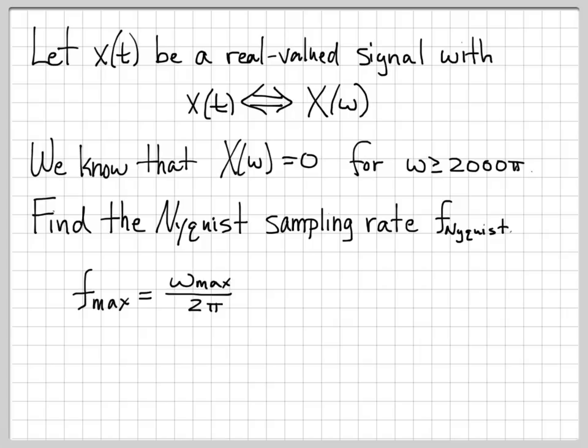So first, let's take the max frequency of our signal and convert it into a linear frequency. We're told that our signal has frequency content that stops at 2,000 pi radians per second. So the maximum radial frequency is 2,000 pi. If we divide that by 2 pi, we can convert it into a linear frequency of 1,000 hertz.